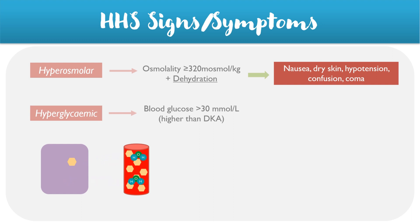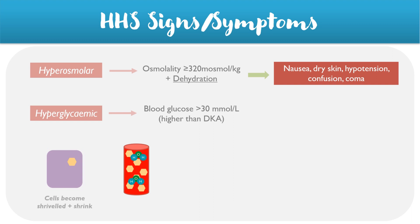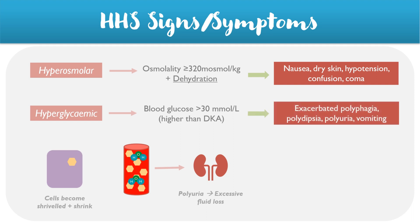This results in the cells becoming shriveled and shrunk over time. Because there's a high level of water in the blood, this results in the kidneys excreting more urine — in other words, polyuria — which causes excessive fluid loss or dehydration over time. Turning towards the hyperglycemia, patients may develop exacerbated diabetic symptoms including polyphagia, polydipsia, and polyuria.